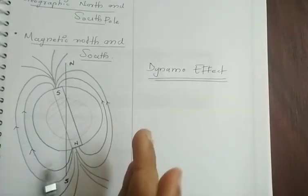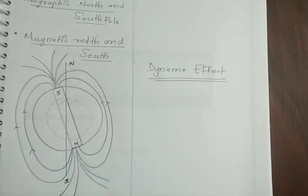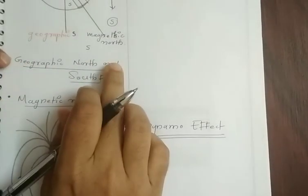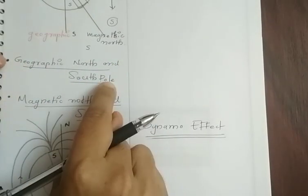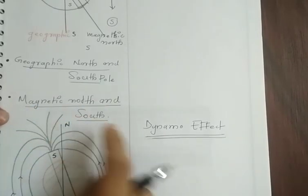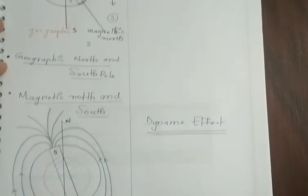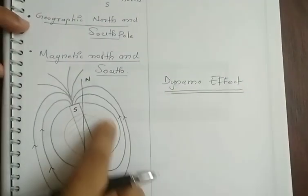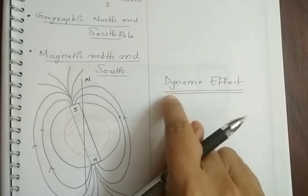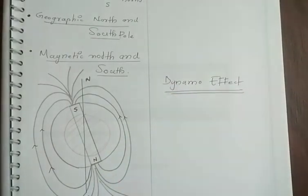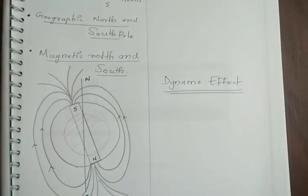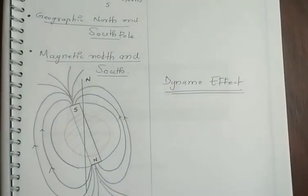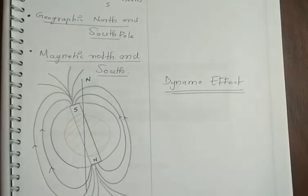So, this covers the magnetic north and geographic south, magnetic north and magnetic south, the magnetic field lines of the earth, and the general definition of the dynamo effect. In the next video, we will be talking about the magnetic elements of the earth.